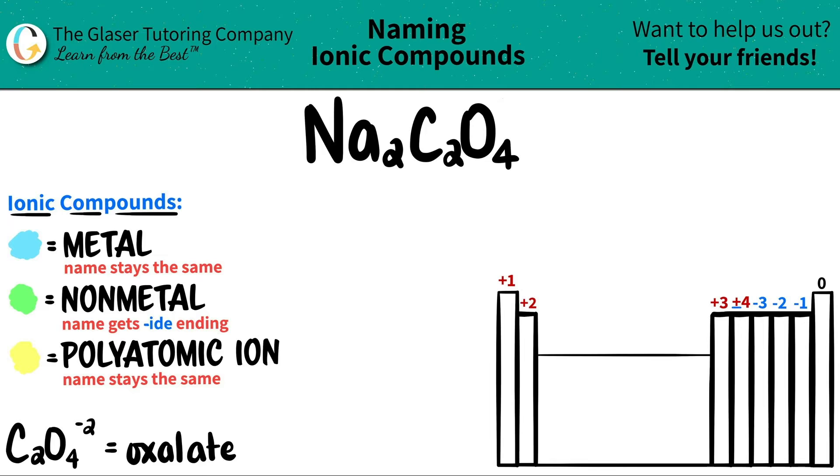Today we are going to be naming the ionic compound Na2C2O4. Now here's a little trick: if you have an ionic compound that has three or more different elements, you know that you're dealing with at least one polyatomic ion. And it's easiest to spot out the polyatomic ion and then work from there.